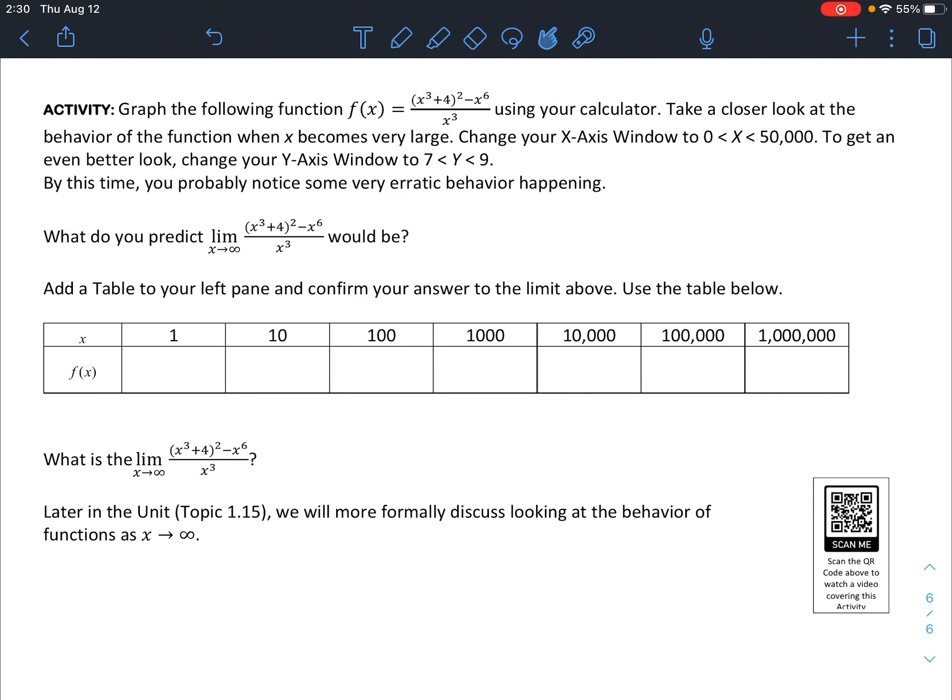Our last one here, we're going to do the same thing with this function. So let's go back to y equals, and let's type in this large function. We have (x³ + 4)² - x⁶ all over x³. Change your window there so you can take a look at this graph. So x should go from 0 to 50,000, and y should go from 7 to 9. You're going to probably see some crazy looking graph on there. It kind of looks maybe like an EKG if you've ever seen one of those.